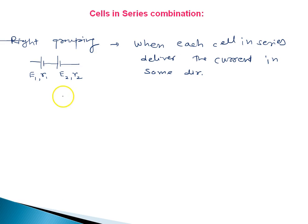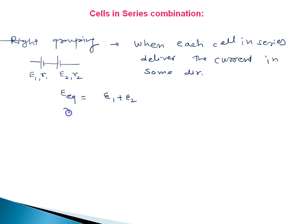So, if I ask you what is the net EMF or equivalent EMF, you will say it is E1 plus E2. And if I ask you what is the net resistance of these two cells in combination, you will say R1 plus R2.